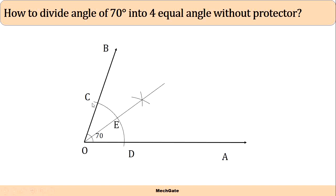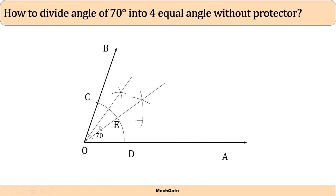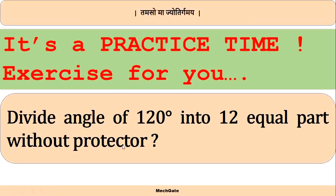Similarly, divide angle COE into two equal parts and angle EOD into two equal parts — this gives four equal parts total. With C as center and radius more than CE, draw an arc; with E as center draw another arc — their intersection gives the bisector of angle COE. Do the same with E and D as centers to bisect angle EOD.